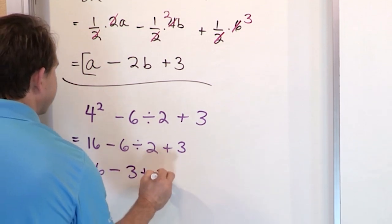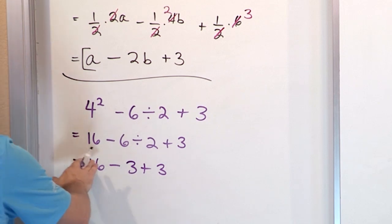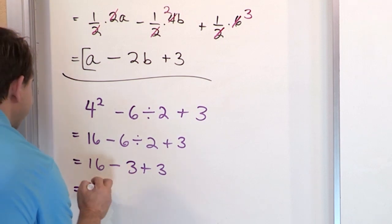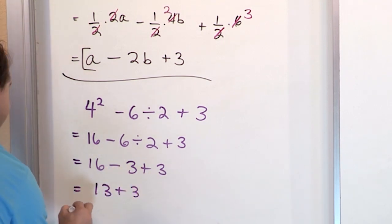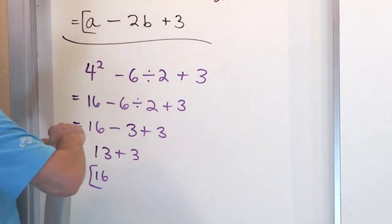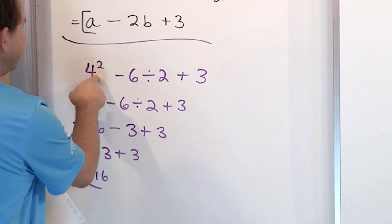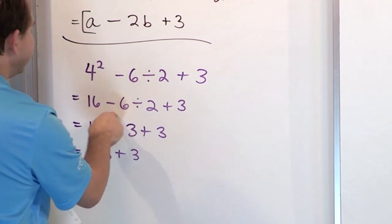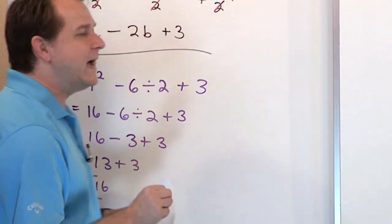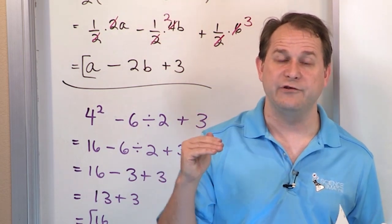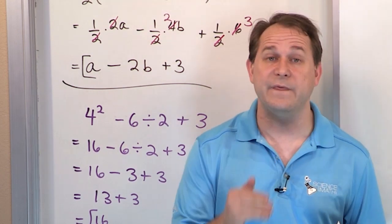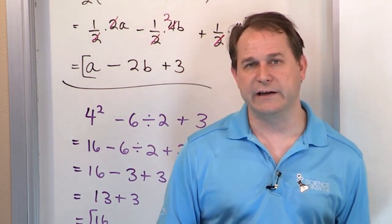Now everything is addition and subtraction, so I go left to right. 16 minus 3 is 13, then plus 3 gives 16 — that's the final answer. The biggest problem students have is they'll do the exponent correctly, but then at this step they'll do 16 minus 6 and get 10, then do the division later. You cannot do that. You have to do any multiplications and divisions first, then do addition and subtraction last. Otherwise you'll get the wrong answer.